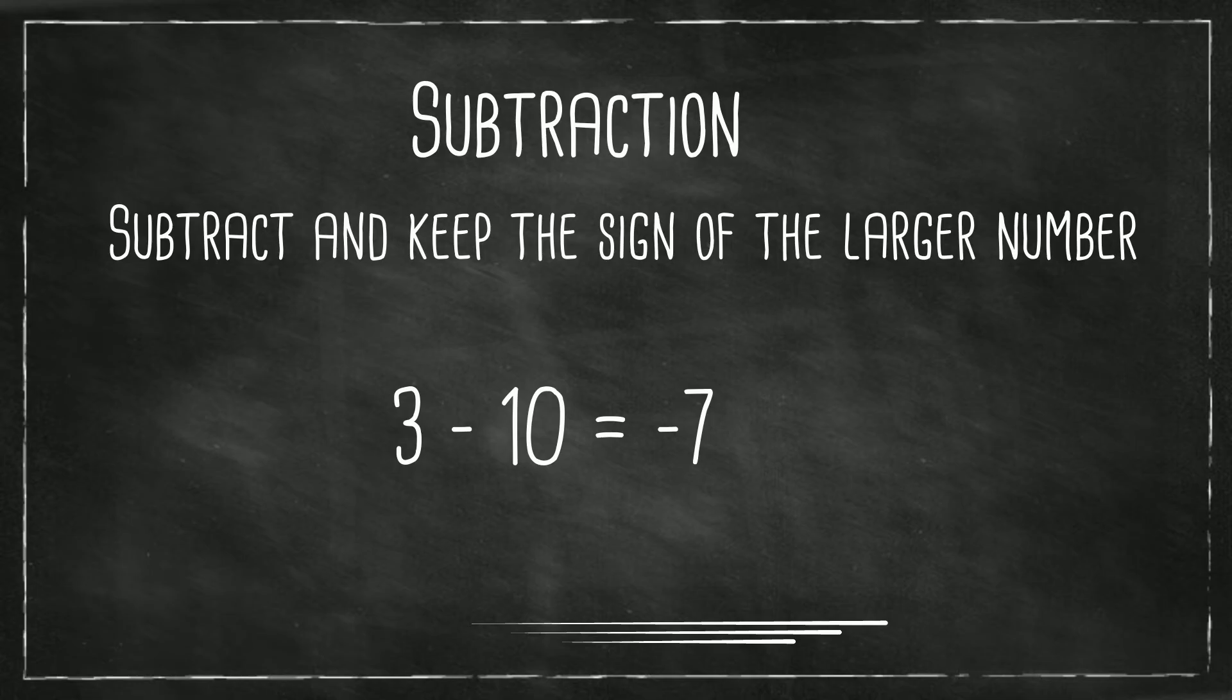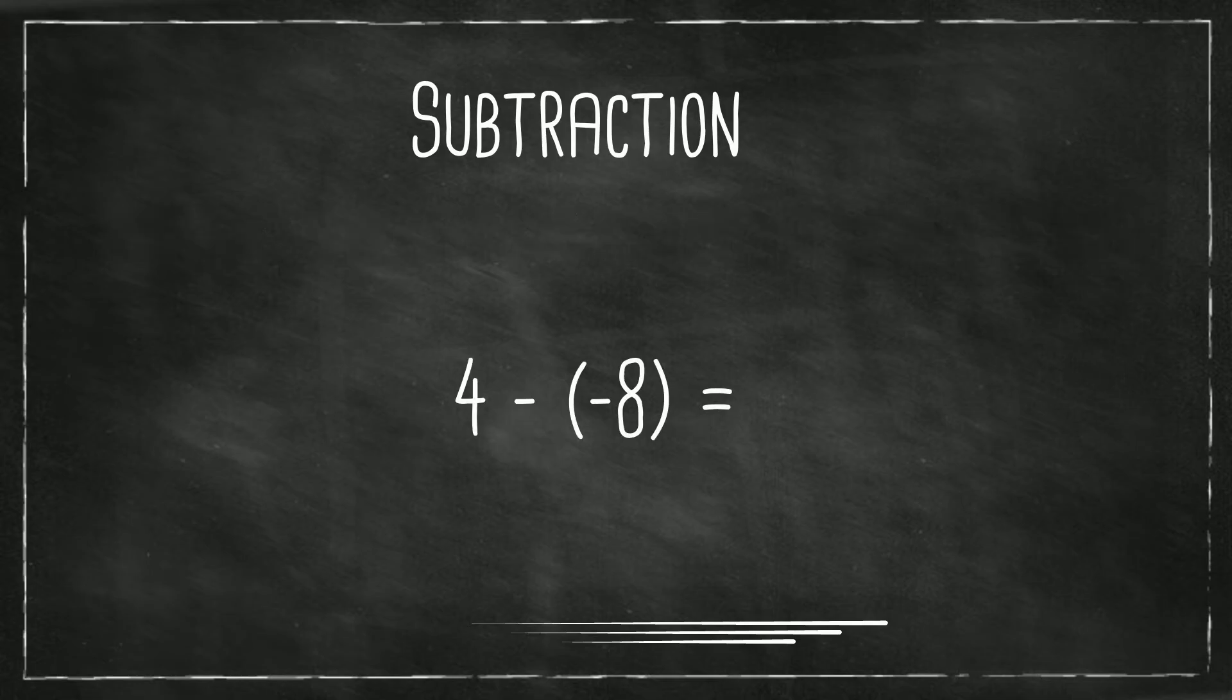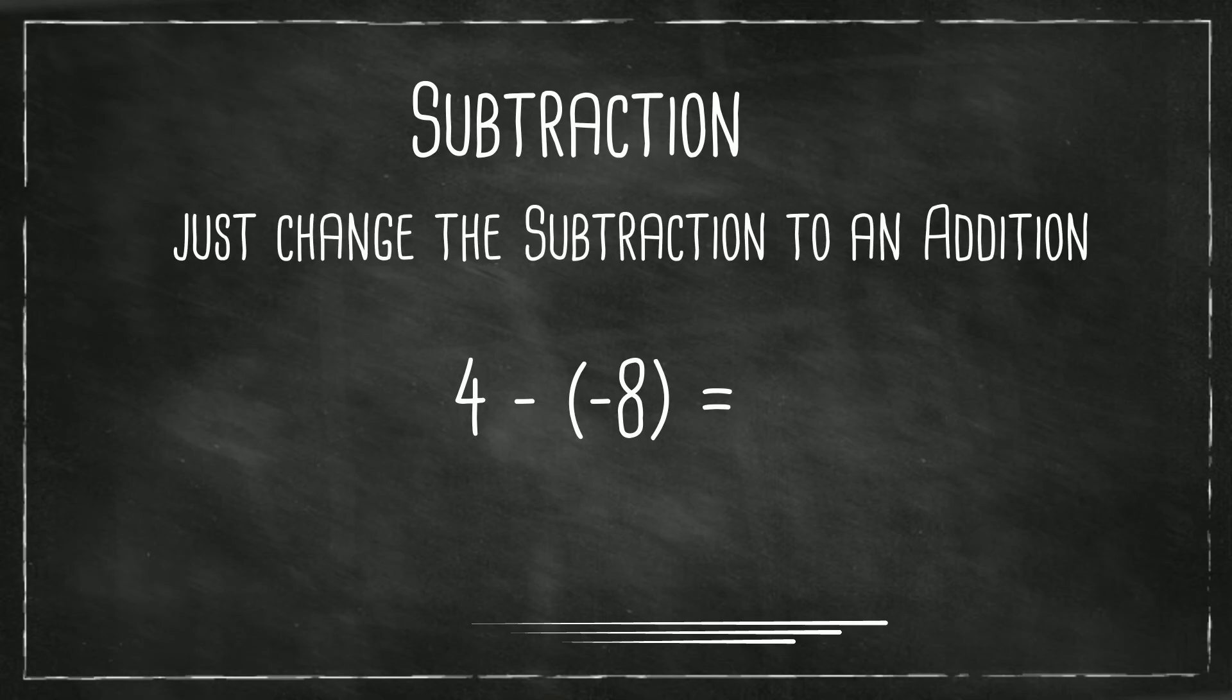And here's the last rule. What do you do with this? 4 minus a negative 8. You are taking a negative of a negative, so it becomes a positive. So a simple shortcut is when you're subtracting a negative number, just change it to positive.